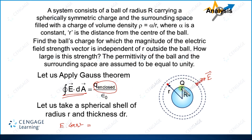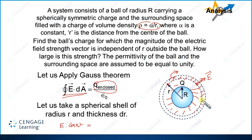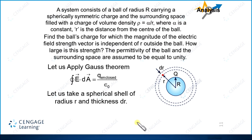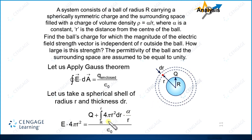The right-hand side should be capital Q plus the charge occupied by this region. This should be calculated using the method of integration. We need to calculate the charge in the spherical shell section. The surface area of this sphere is 4 pi r squared and thickness is dr, so the volume of this region equals 4 pi r squared multiplied by dr. If we multiply this volume by the charge density, we get dq — the charge occupied by this region. The total charge equals capital Q plus the integration of dq, with the limit of integration from capital R to small r.